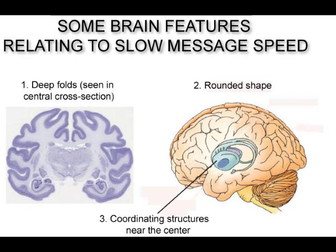It hardly need be said that this slow message speed has serious implications for the human brain. To begin with, we can assume that this slow message speed has placed enormous evolutionary pressure on producing a brain that is tightly coordinated and compact. Such an evolutionary push toward tight coordination and compactness would help to explain a lot about the brain — including the brain's deep surface folds and its rounded shape, because these features tend to reduce the distance that brain impulses need to travel.